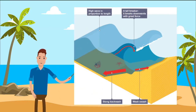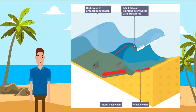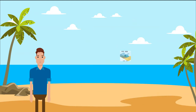Firstly, let's look at destructive waves. Destructive waves are created in storm conditions. They are created from big, strong waves when the wind is powerful and has been blowing for a long time. They occur when wave energy is high and the wave has traveled over a long fetch. They tend to erode the coast, have a stronger backwash than swash, a short wavelength, and are high and steep.